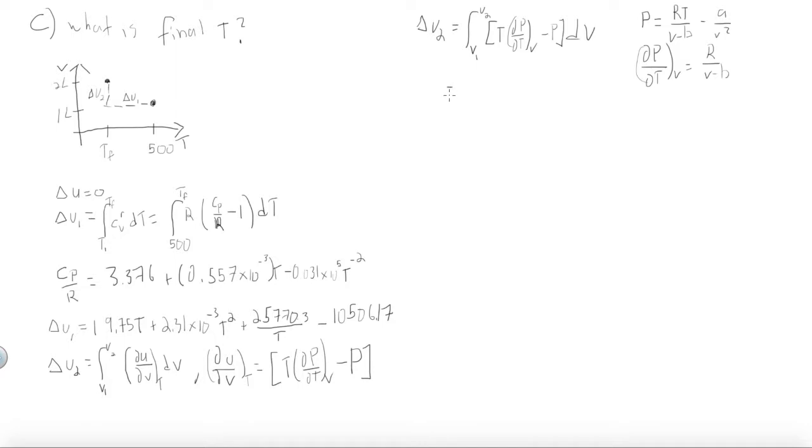We can plug this known relationship into the same integral that we've done for the change in the second internal energy. And bringing this up, we get it is equal to RT over V minus B minus pressure, dV.